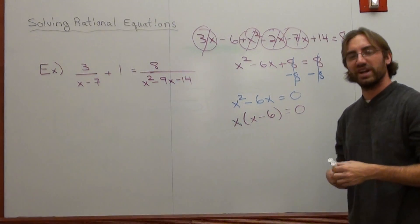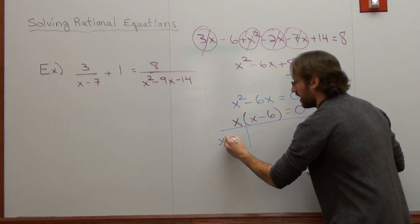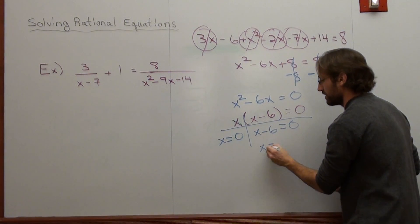This is incorporating everything we've learned. Use the zero product property. x equals 0. x minus 6, equals 0. So, x equals 6.